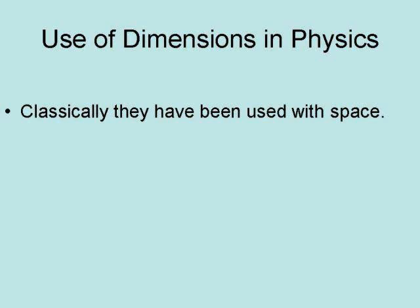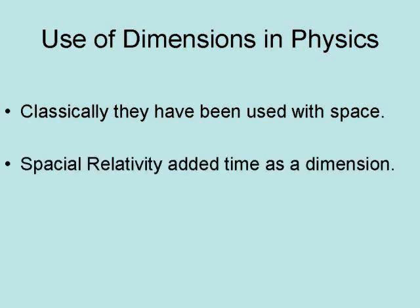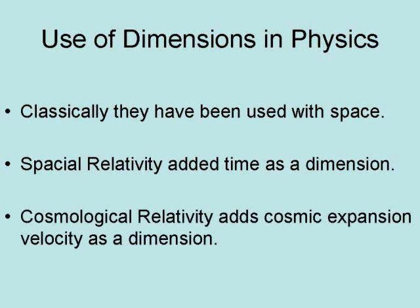Classically, in physics, dimensions have been used with space. Special relativity added time as a dimension. Cosmological relativity added cosmic expansion velocity as a dimension.